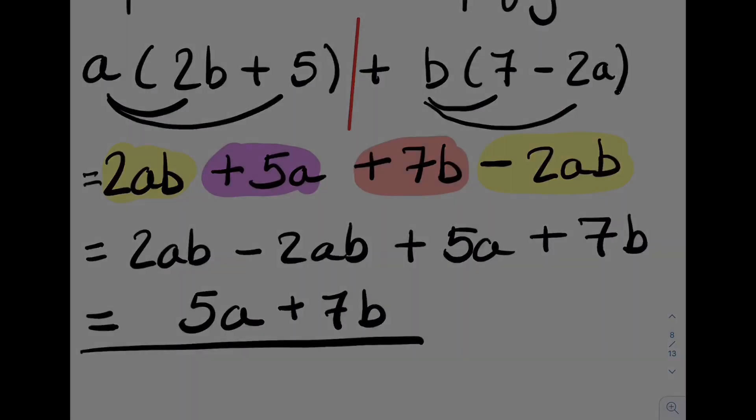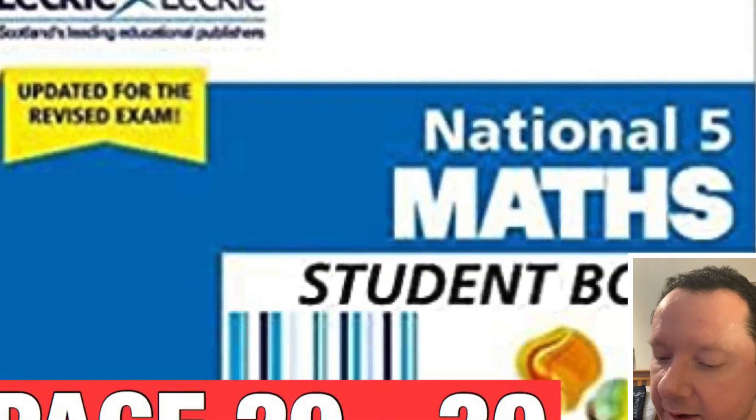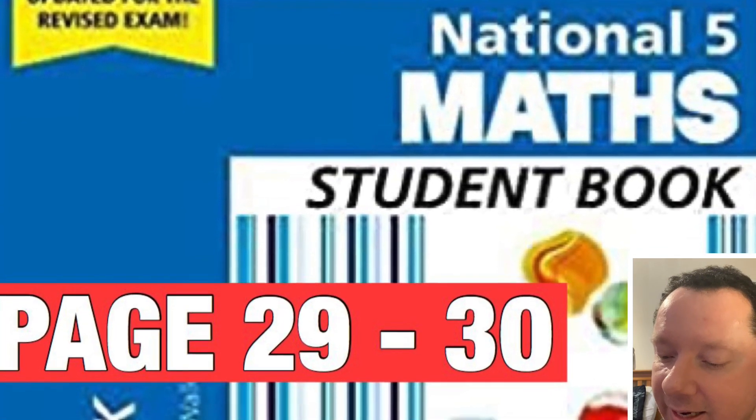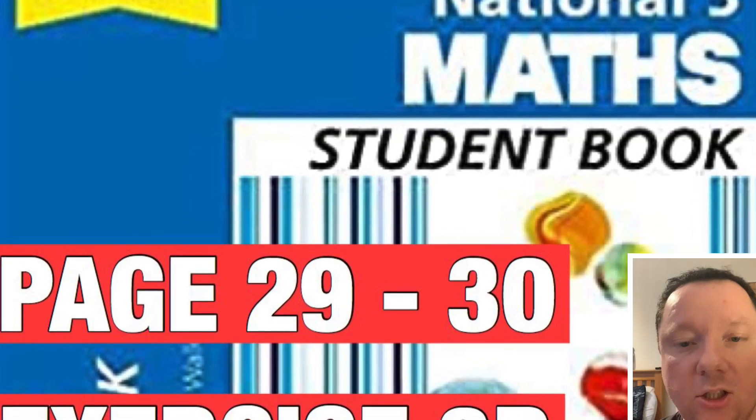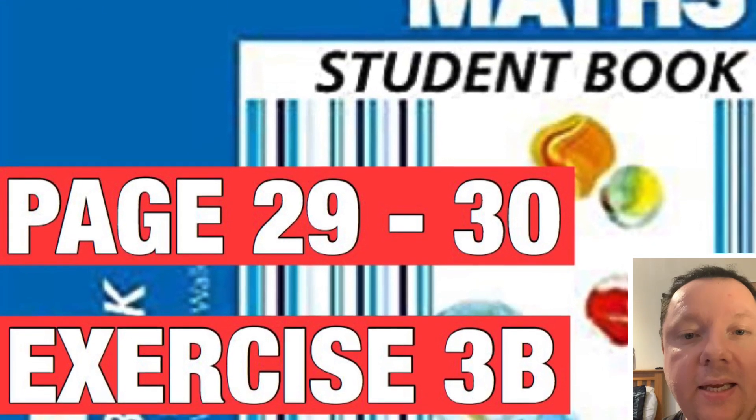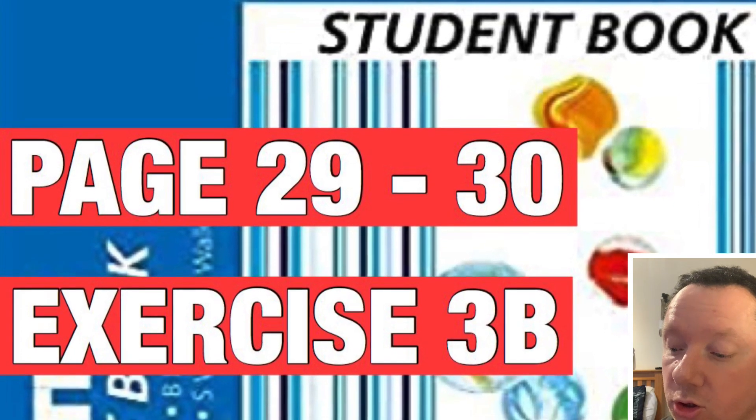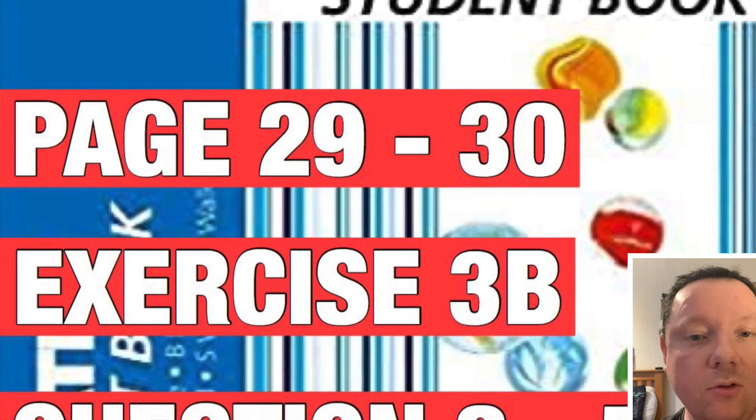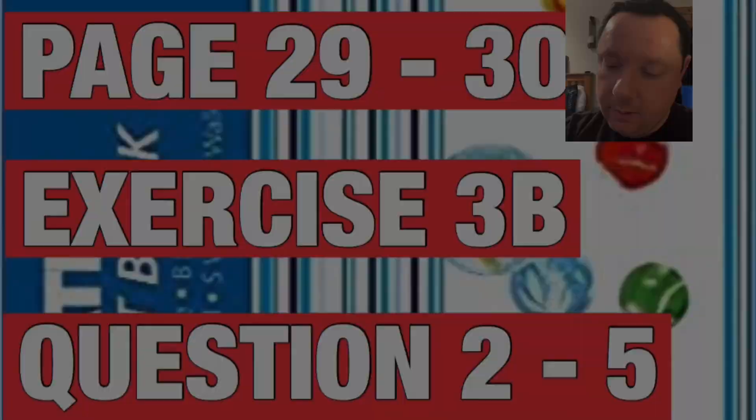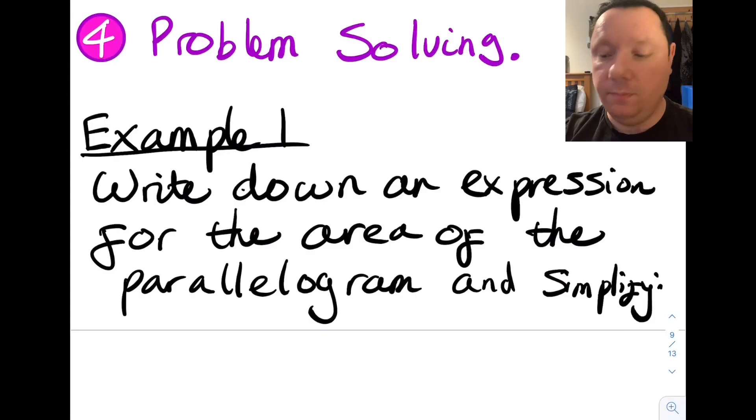Okay. Again, for those of us who are doing homeschooling and we've got the Leckie and Leckie National 5 textbook, here is the page numbers. It's page 29 to 30, exercise 3b. And you'll be starting at question 2, but only doing to question 5. So question 2 to 5. Next thing. And the last thing for this video. Problem solving.